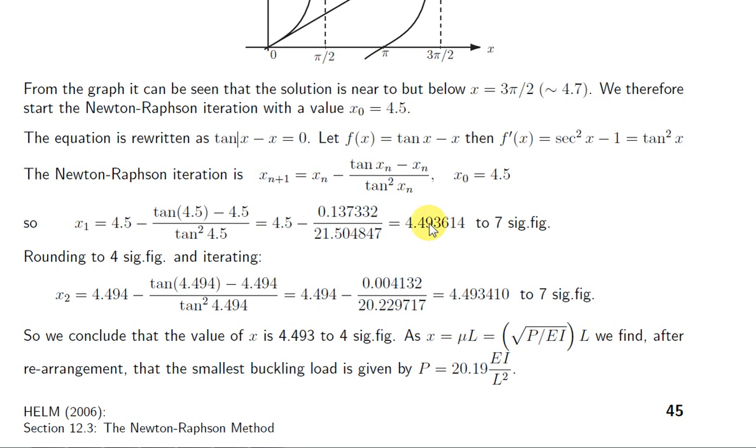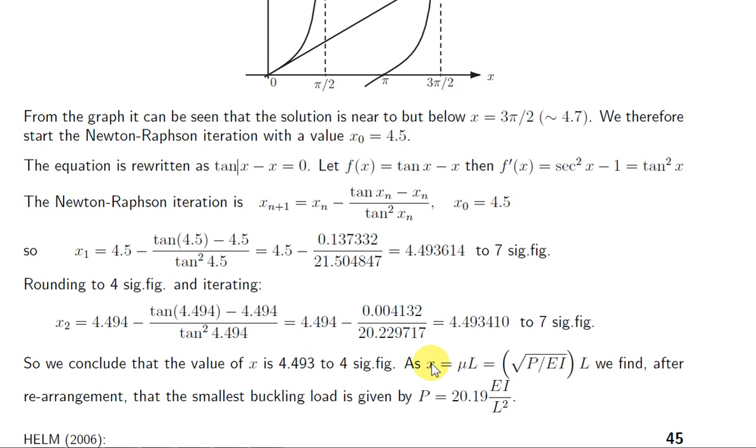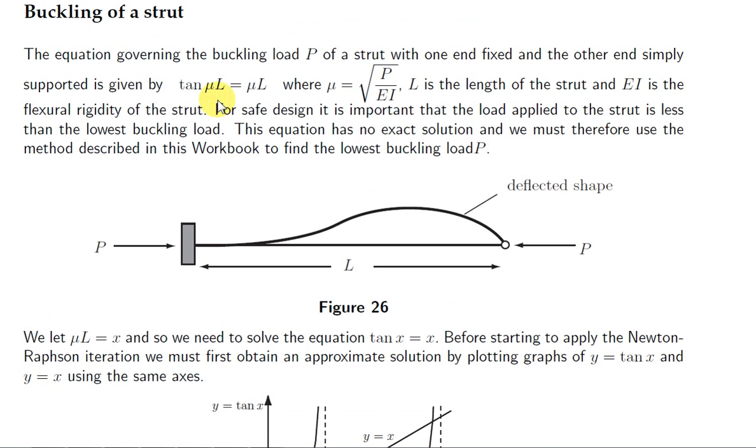The first three decimal places don't change when we do this second iteration here. So we expect that to continue. If we do further iterations, we will get 4.493 for the values that we get out. So 4.493 is the value of x, correct to three decimal places, or four significant figures.